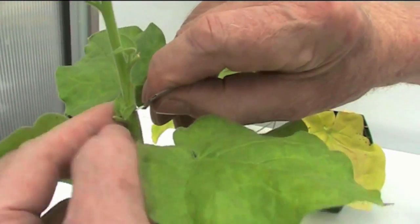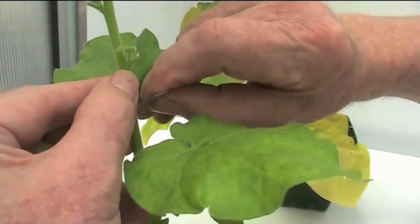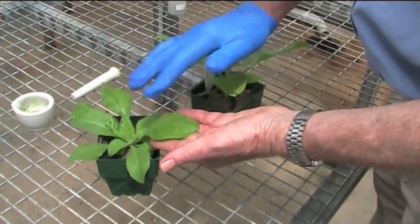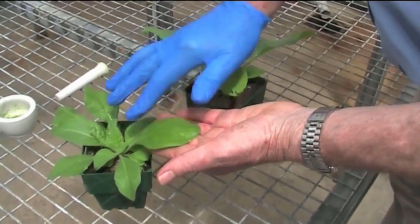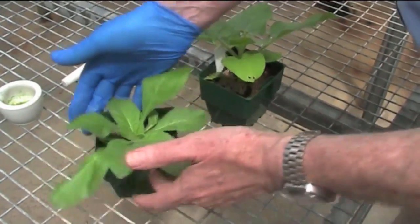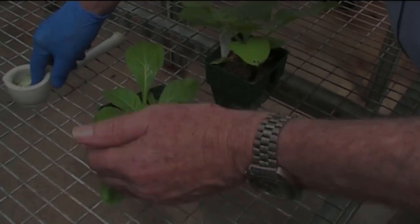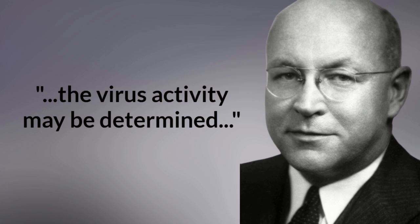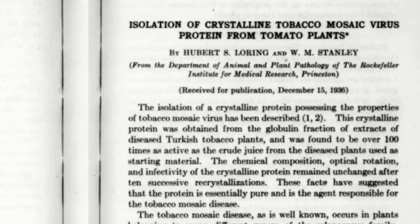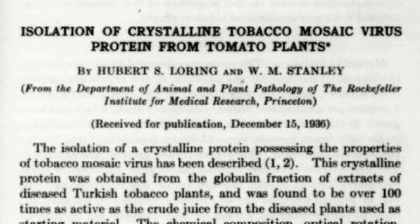Firstly, the leaves need to be roughed up a little, and then a preparation containing the alleged virus is introduced. So there are far too many variables to consider before claiming it must be a virus responsible for subsequent observations. Stanley goes on to report that the virus activity may be determined. I looked up a study from 1937 — 'Isolation of Crystalline Tobacco Mosaic Virus Protein from Tomato Plants,' also by Stanley — purporting to show such activity.